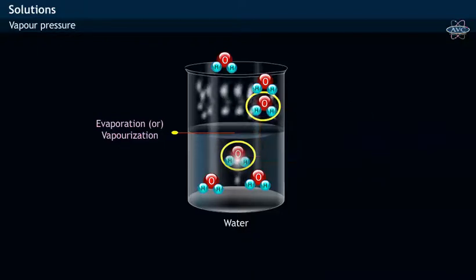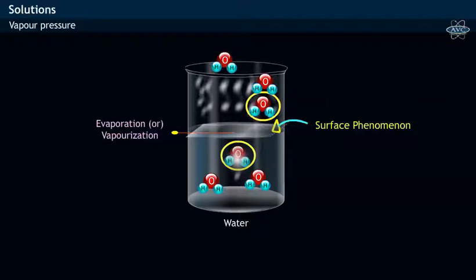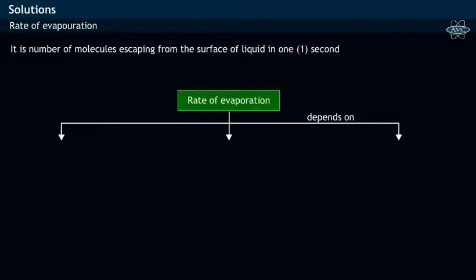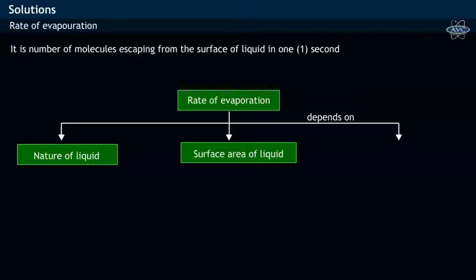Evaporation is a surface phenomenon. Rate of evaporation is defined as the number of molecules escaping from the surface of the liquid in one second. Rate of evaporation depends on factors like nature of liquid, surface area of liquid, and temperature.